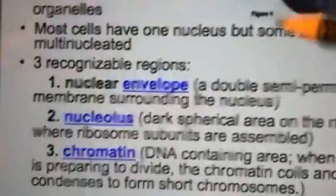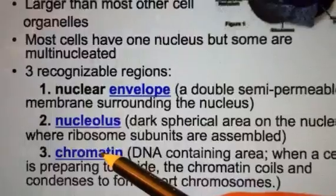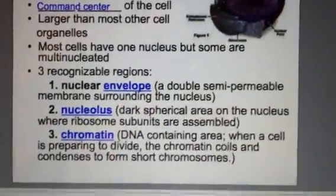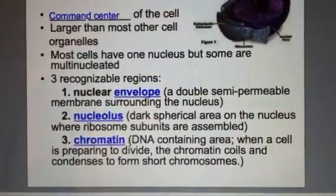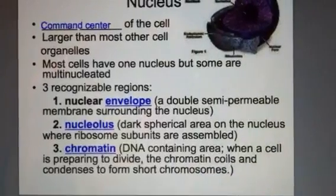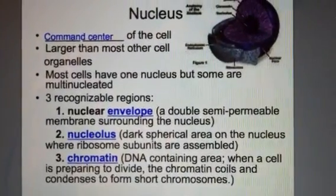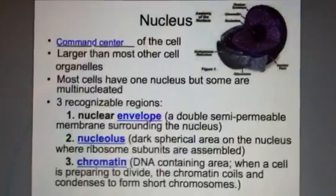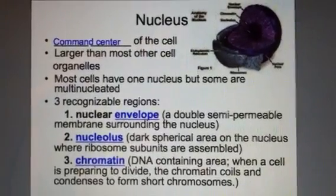The third component is chromatin — the grainy, spaghetti-like structure inside the nucleus. Chromatin is basically DNA. When a cell is preparing to divide, the chromatin will uncoil and condense to form chromosomes that you'll be able to see. We'll be talking more about that later in this chapter.